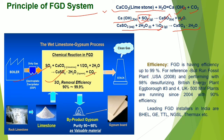FGD has efficiency up to 99%. For reference, the Bull Run fossil plant, a 920 MW coal-based plant in USA, started its operation with FGD in 2008 and is performing with 98% desulphurization. British Energy plant, Eggborough, units 3 and 4 in UK, also 500 MW plants, running since 2004 with 90% efficiency. Efficiency depends on the nature and quality of fuel and sulfur content. Leading FGD installers in India are BHL, GE, TTL, NGSL, Thermax, etc.